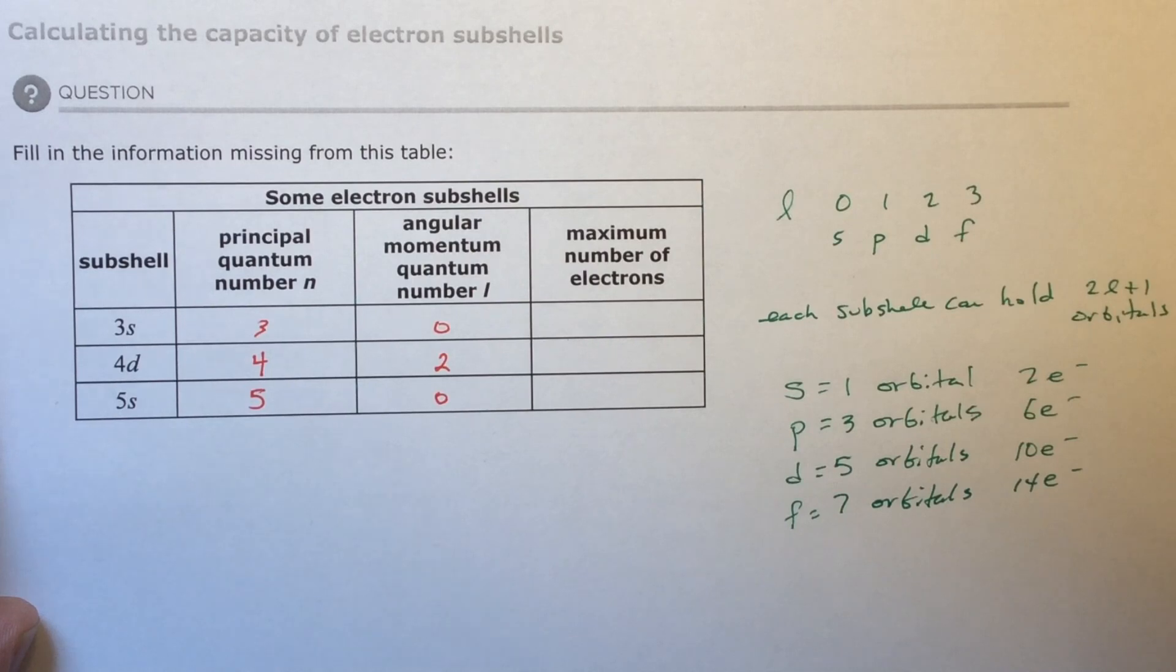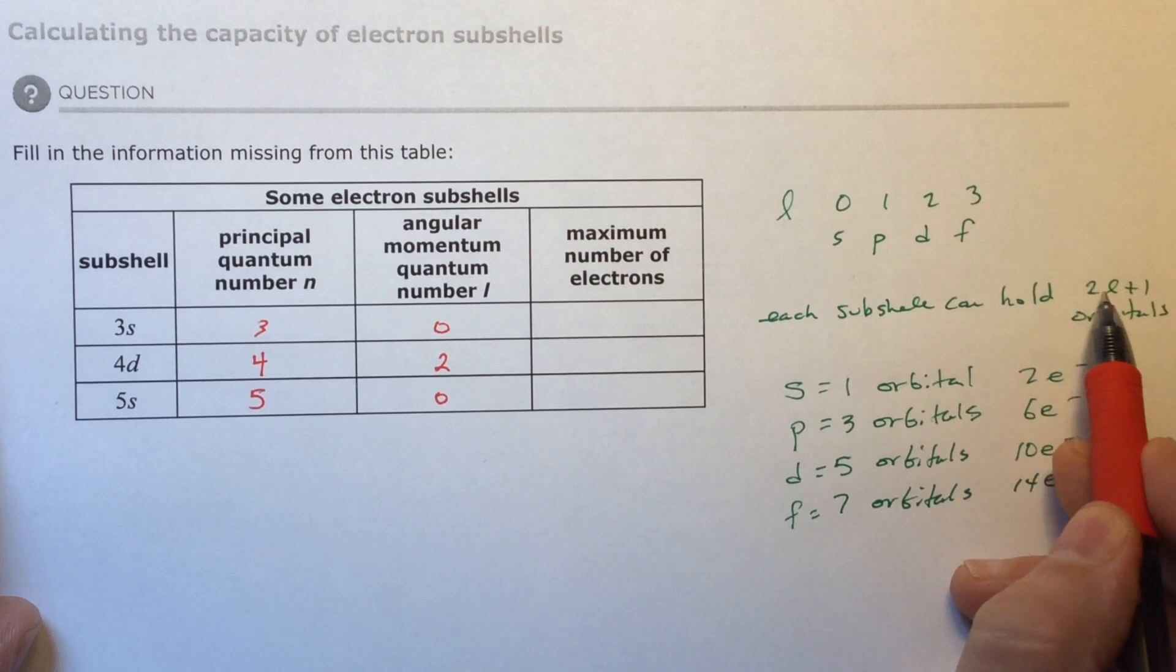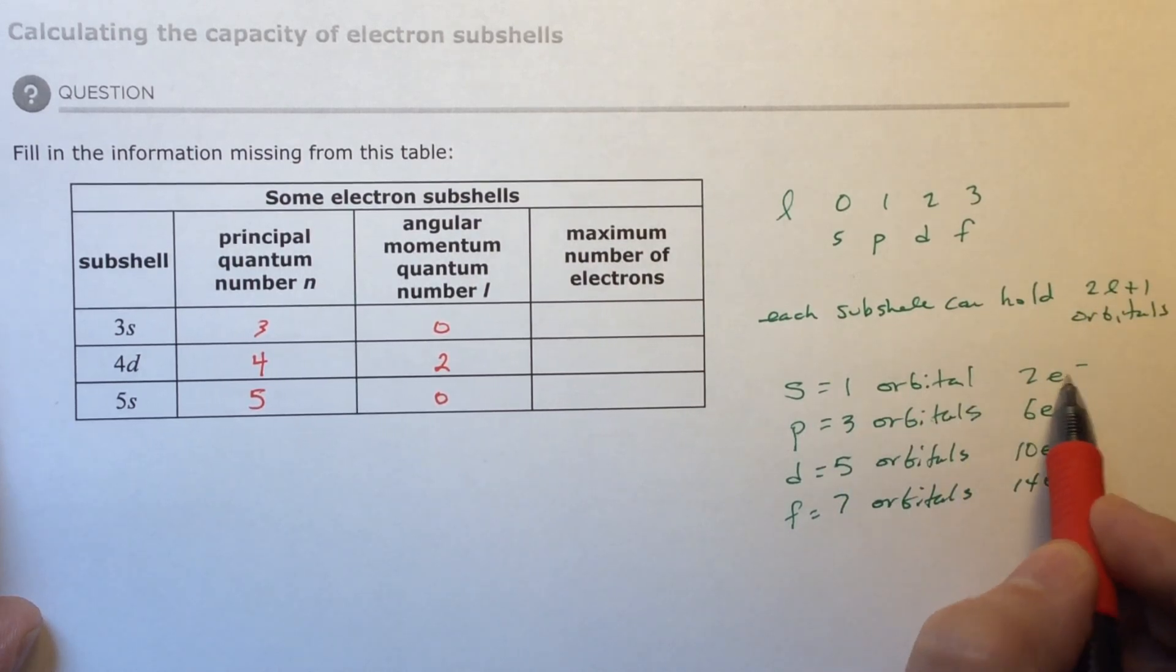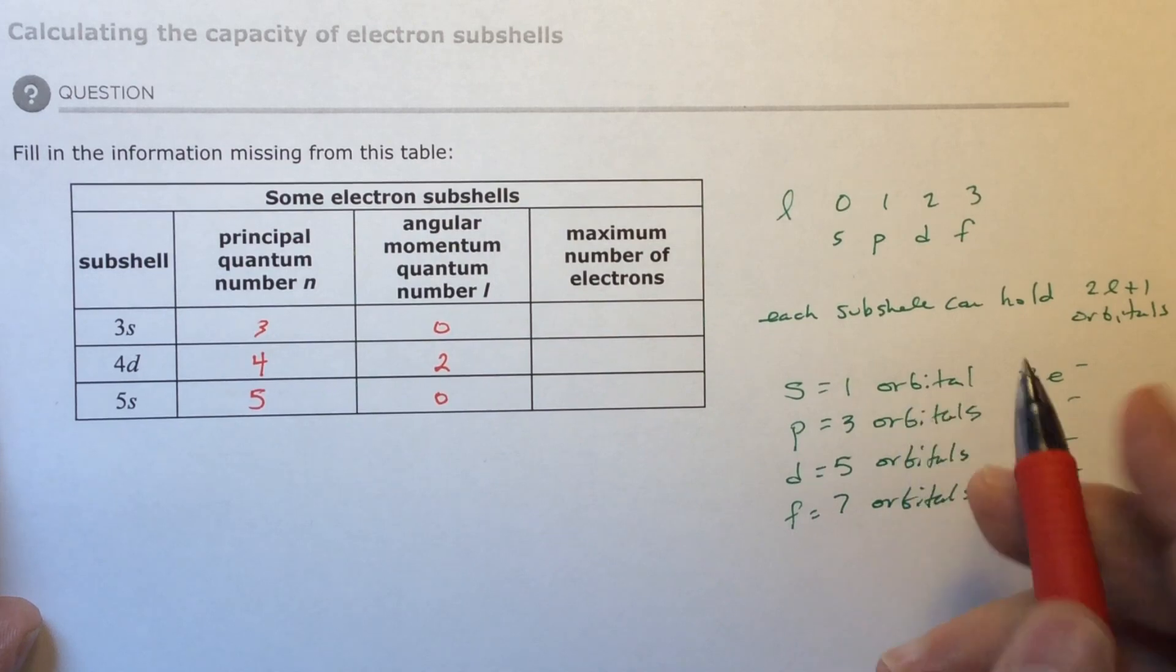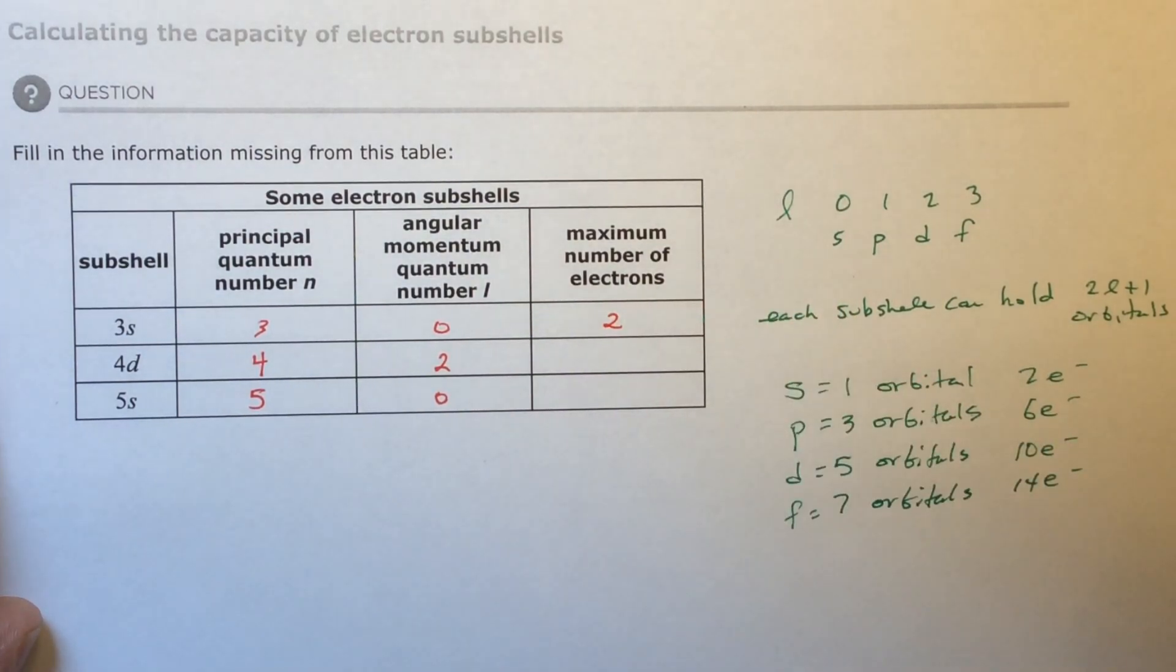Now how many electrons can fit in an S? An S has one. So S is two times zero plus one. That's one orbital with two electrons in each orbital. So that means the total number of electrons would be two.